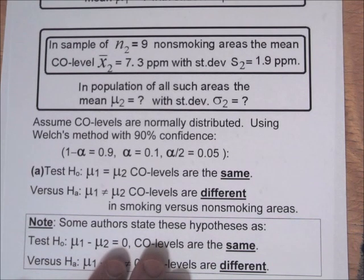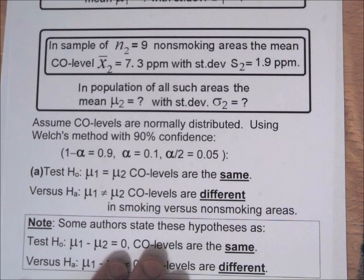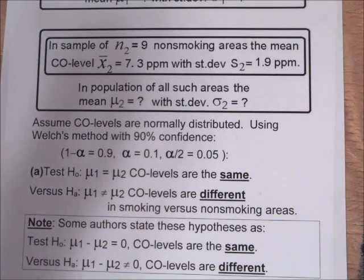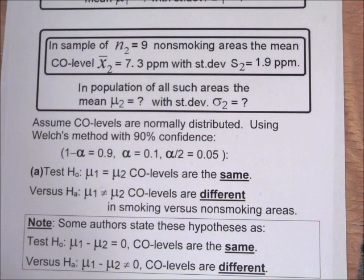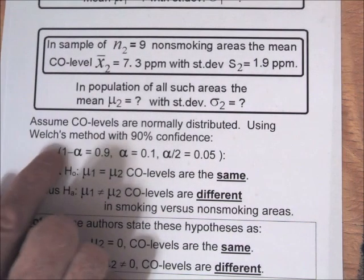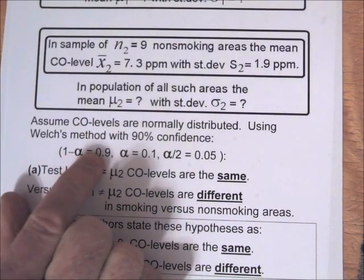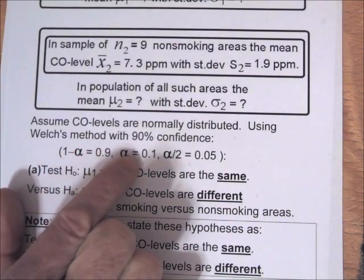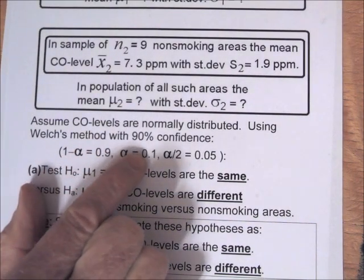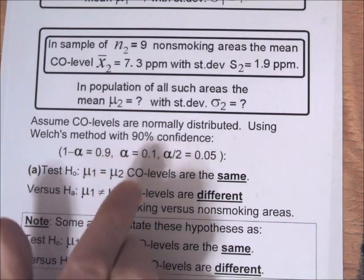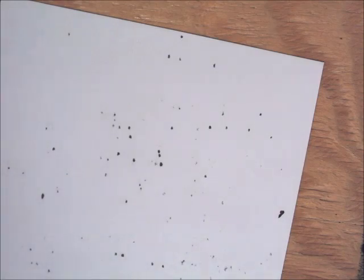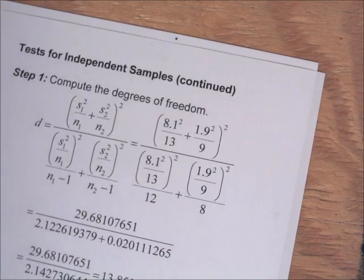Our confidence level is 1 minus alpha, which as a decimal is 0.9. That means alpha, our level of significance, is 0.1, and alpha over 2 is 0.05. We're going to be using the T table.